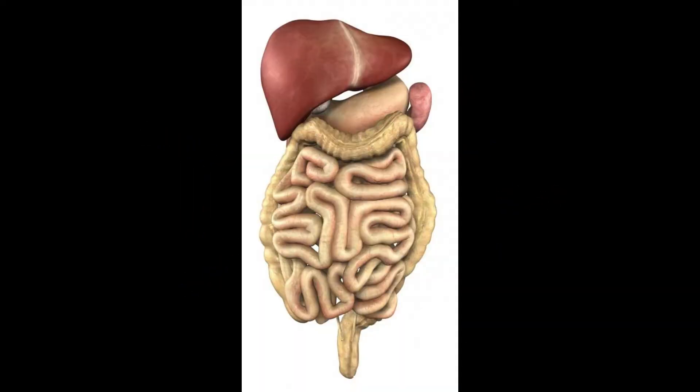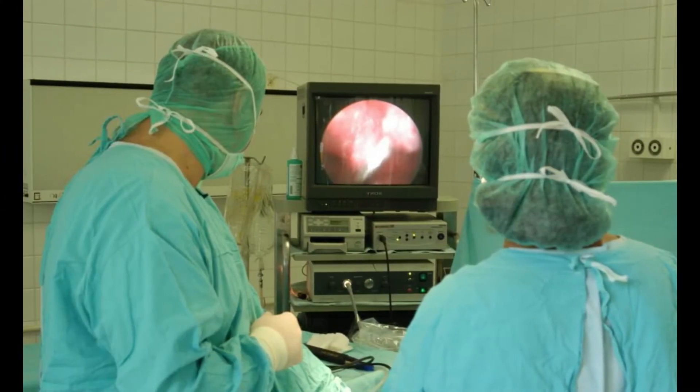The treatment used for a liver cyst typically depends on the type of cyst, where it is located, and whether or not it is causing problems with the patient's health. If a liver cyst is benign and doesn't have a noticeable effect on the patient's health, treatment may not be necessary at all. In other cases, however, health effects or size may necessitate treatment, and doctors may use antibiotics, drainage, or surgery. In some cases, doctors may even treat a liver cyst by treating the underlying condition that caused it.